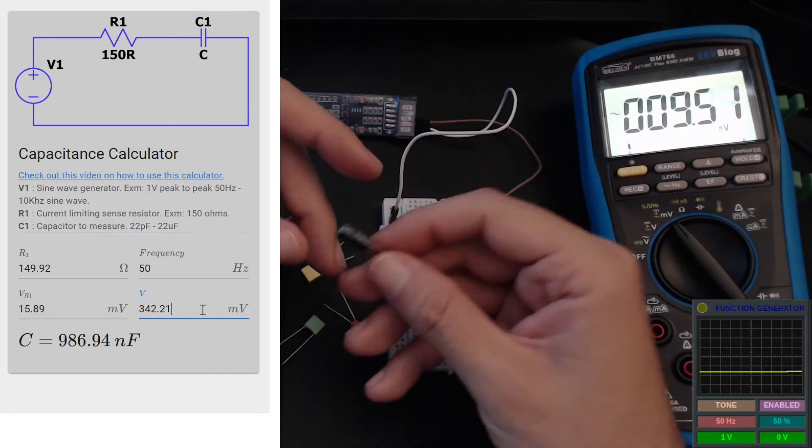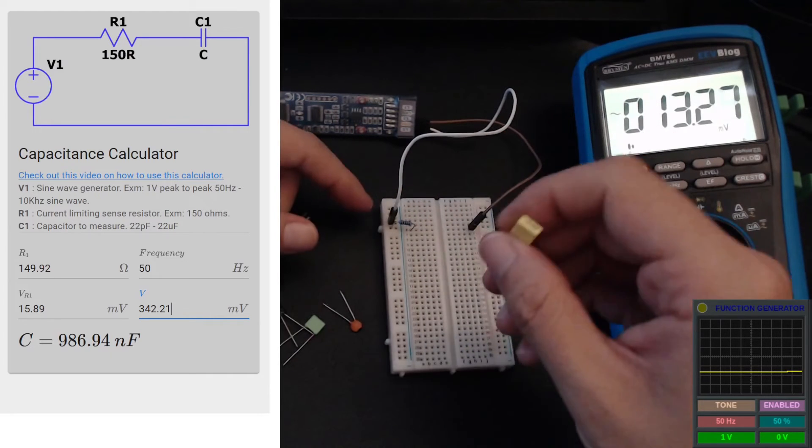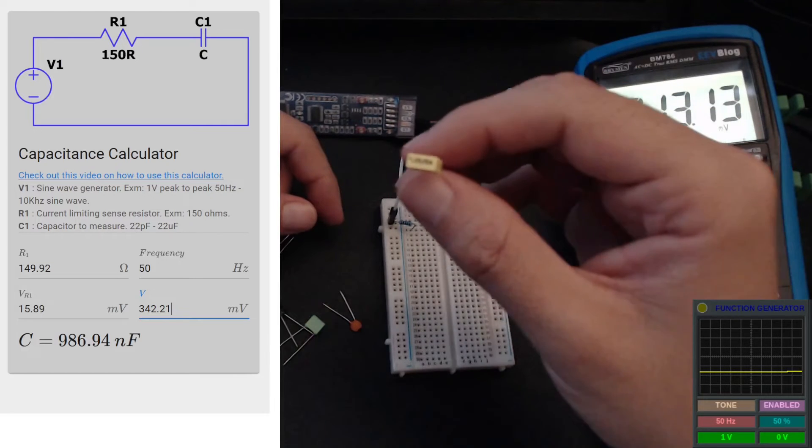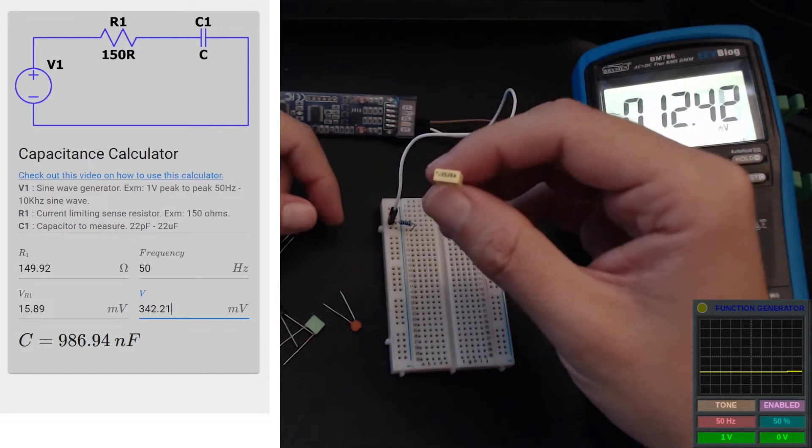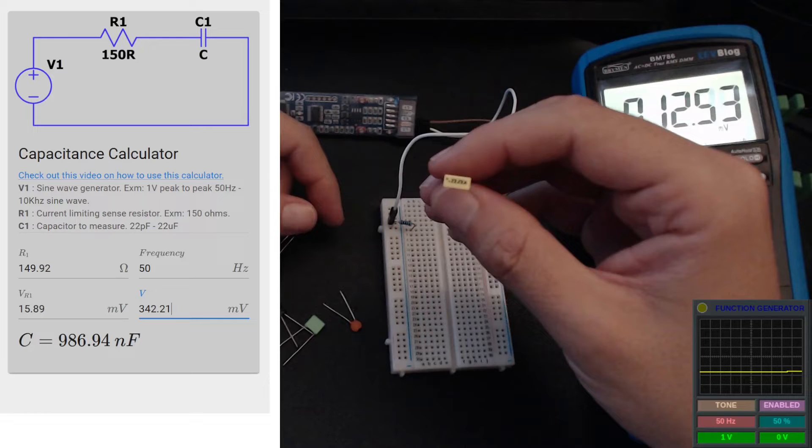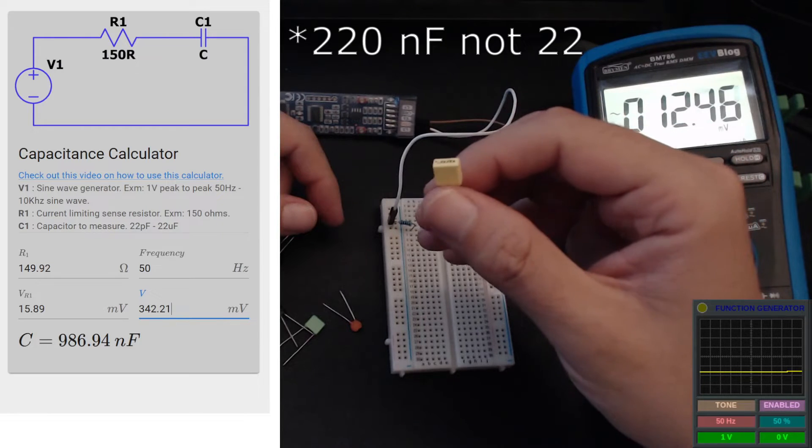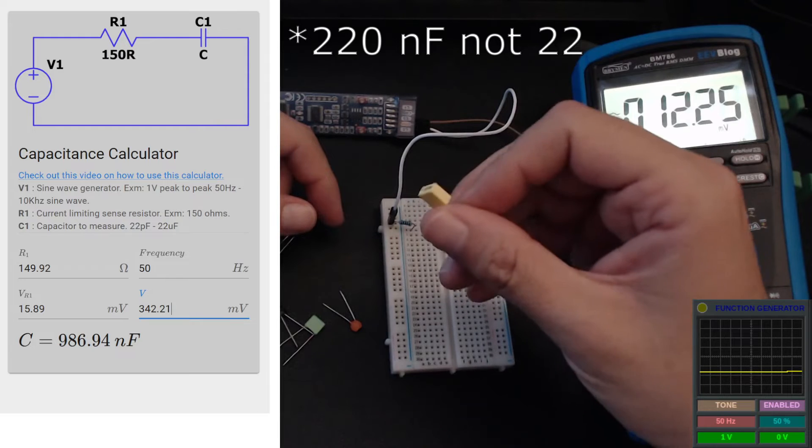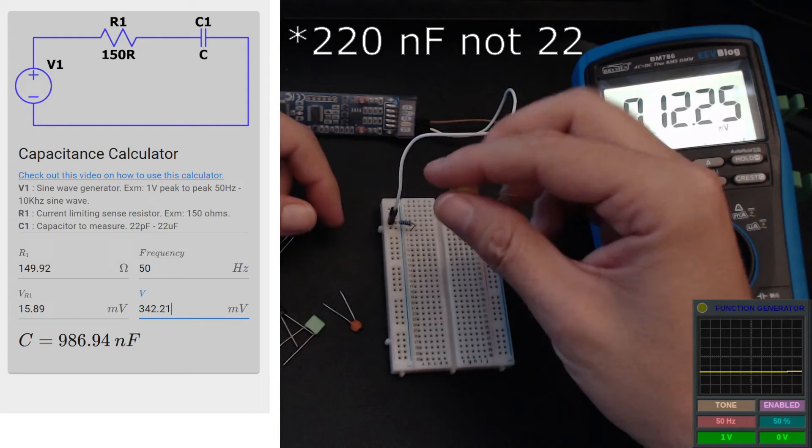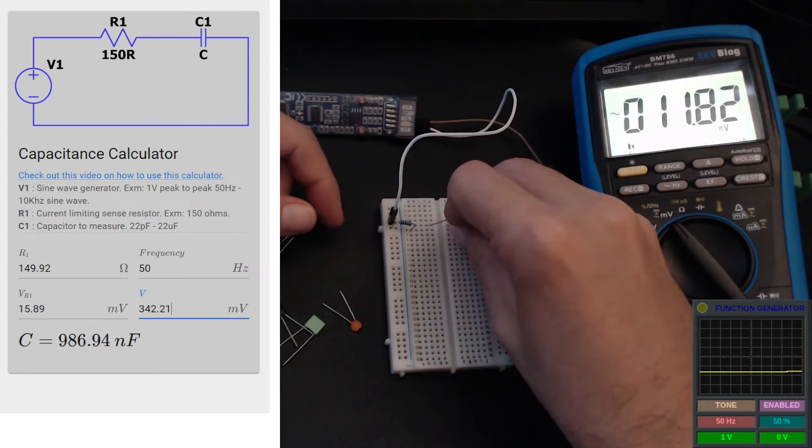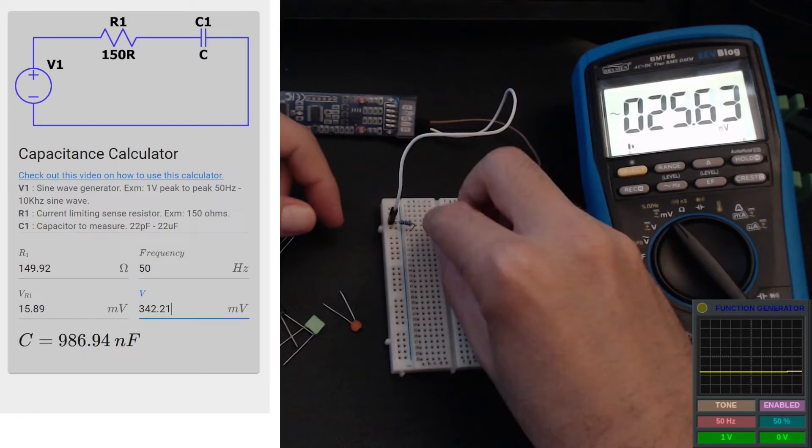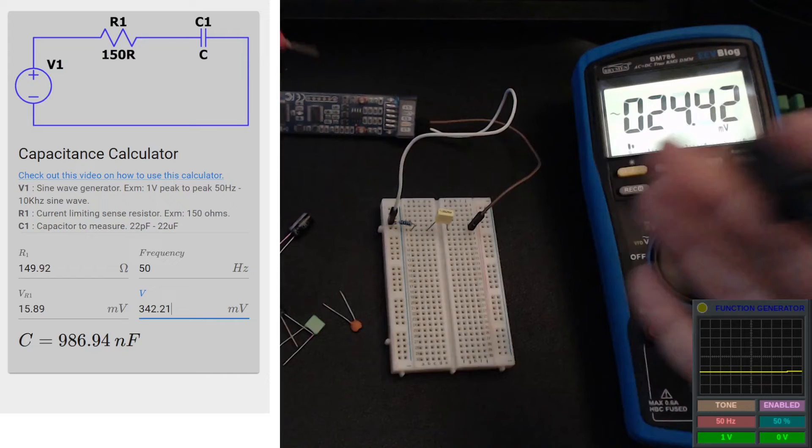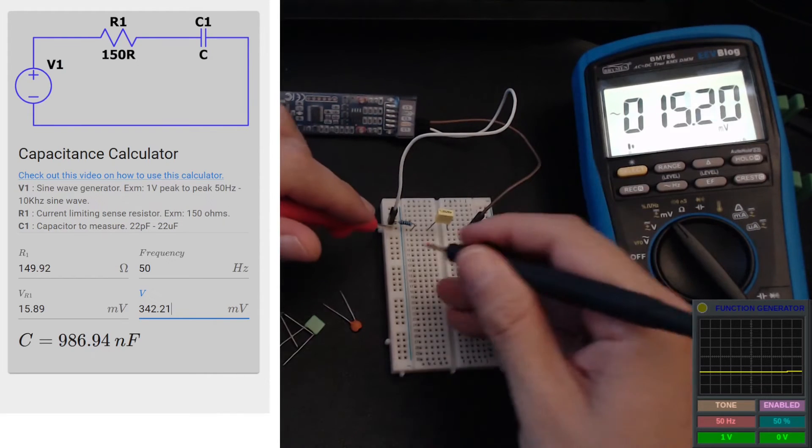Now let's measure something in the nanofarads range. This is, I don't know if you can read it on the camera, but says 22 J 2A on it, which is a 22 nanofarads capacitor with 5% tolerance. I'm just going to put it in series with our resistor just as we did with the other ones, and our signal is still at 50 hertz, it should be enough I imagine.